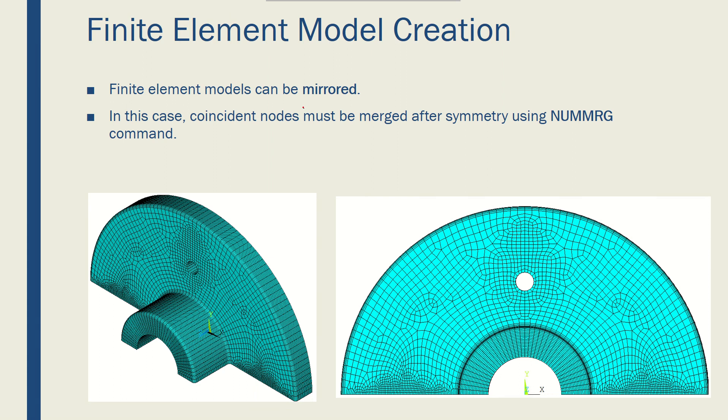Finite element models can be mirrored, and after you mirror them, their nodes and elements will be copied to the other end. Here, I have copied the right portion, this part, on the other side, so I make a half model.